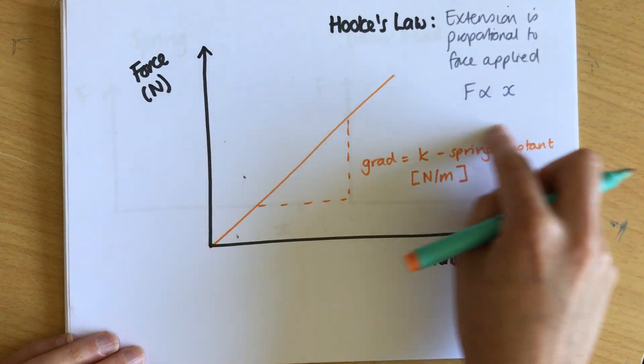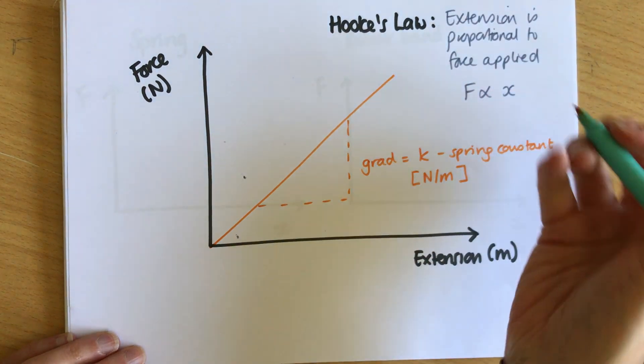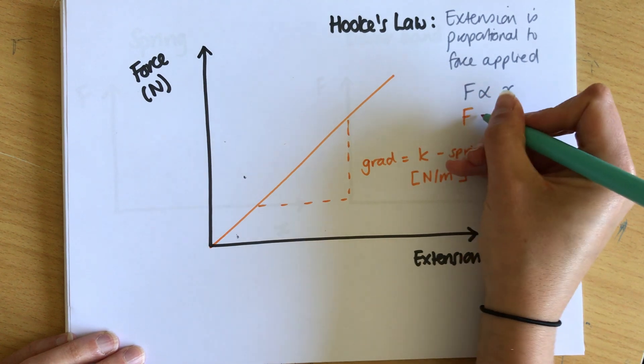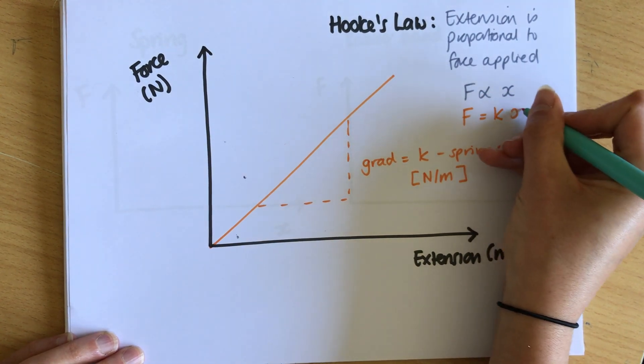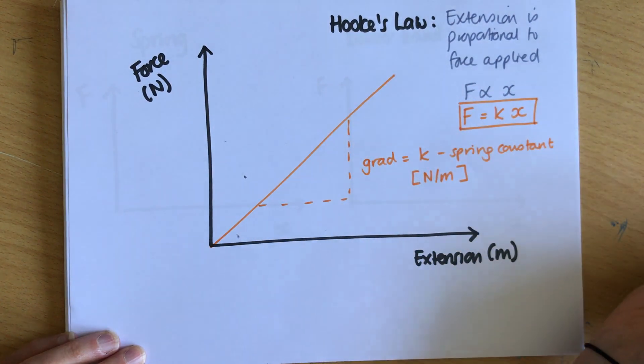We can put this into an equation—we don't just have to say that F is proportional to X, we can actually give it an equation, not a proportionality, and that is F equals kX and this is Hooke's law in equation form.